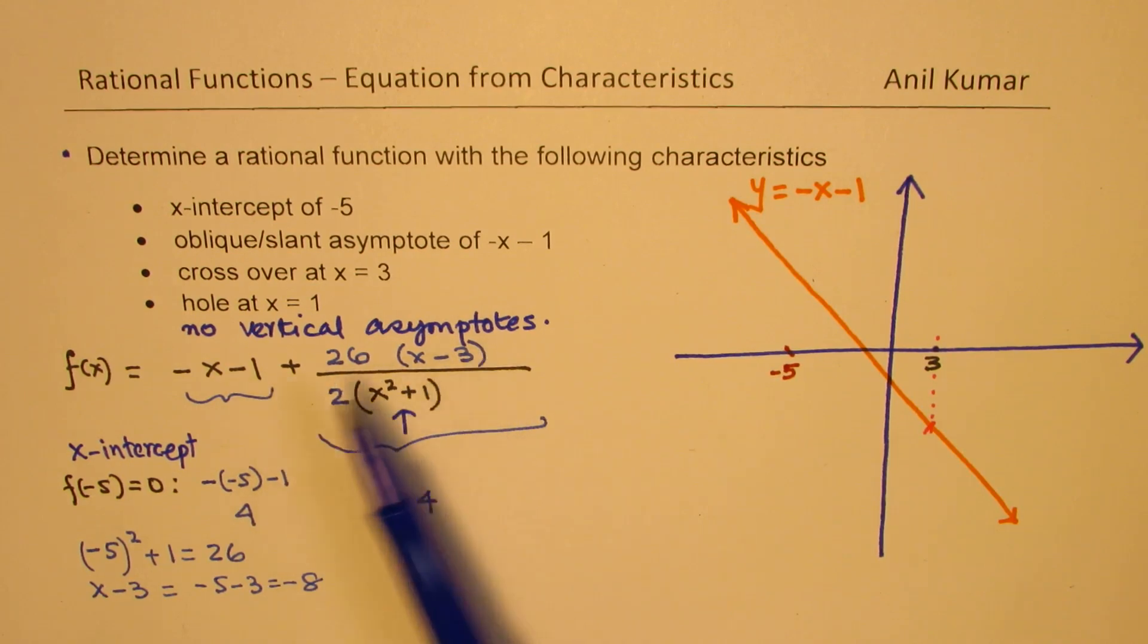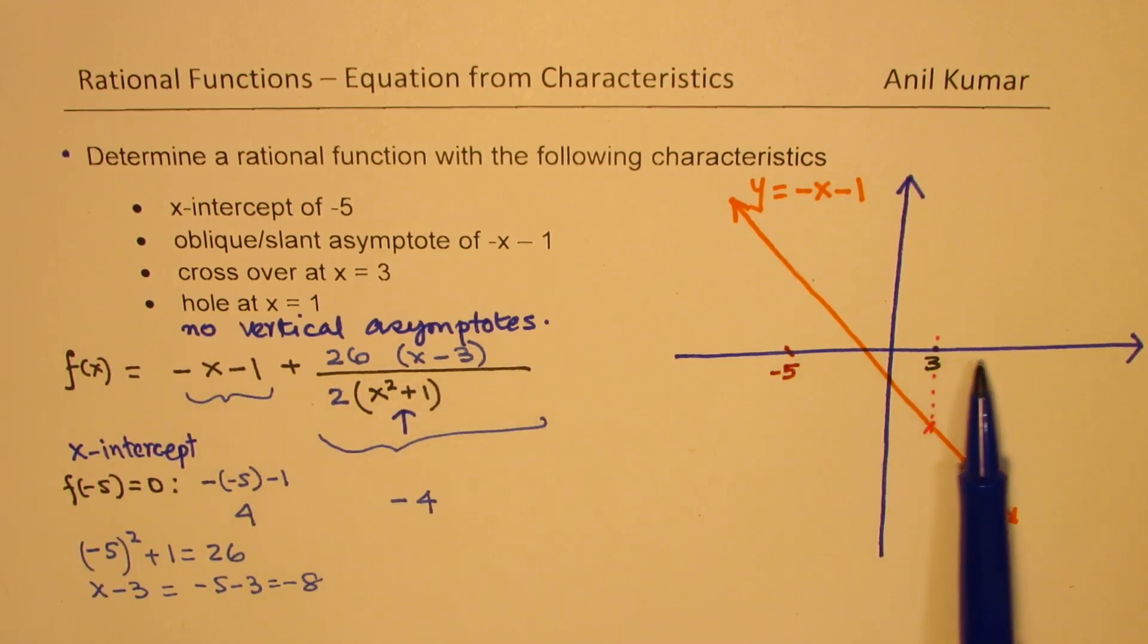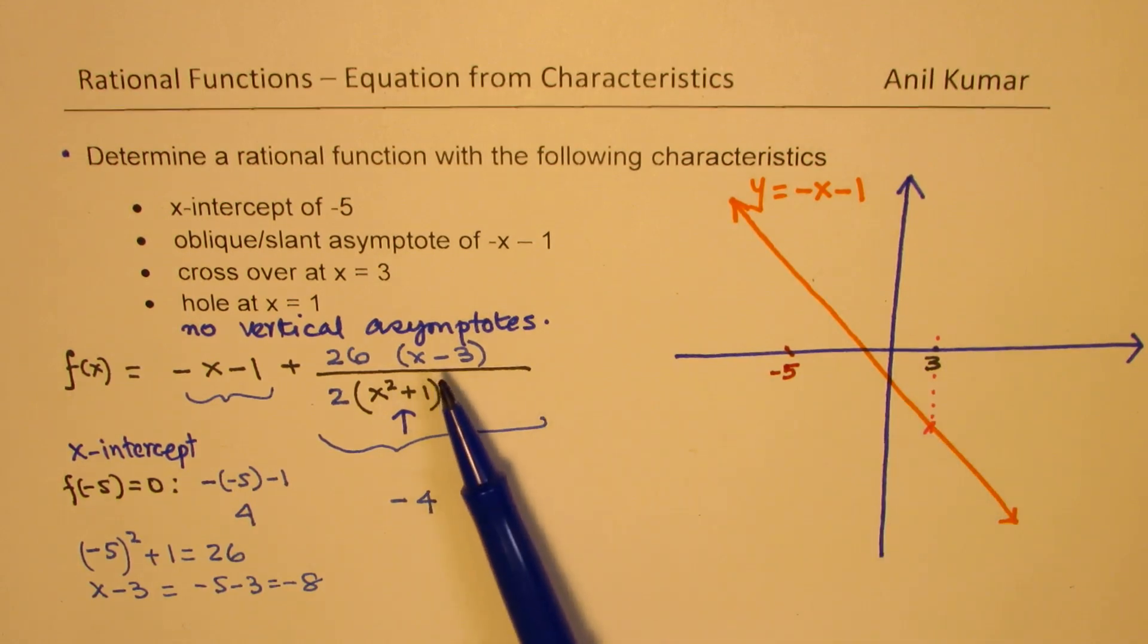And since at 3, we have a value which is already negative, so it is going to be on the right side. So that is a good assumption. Now,